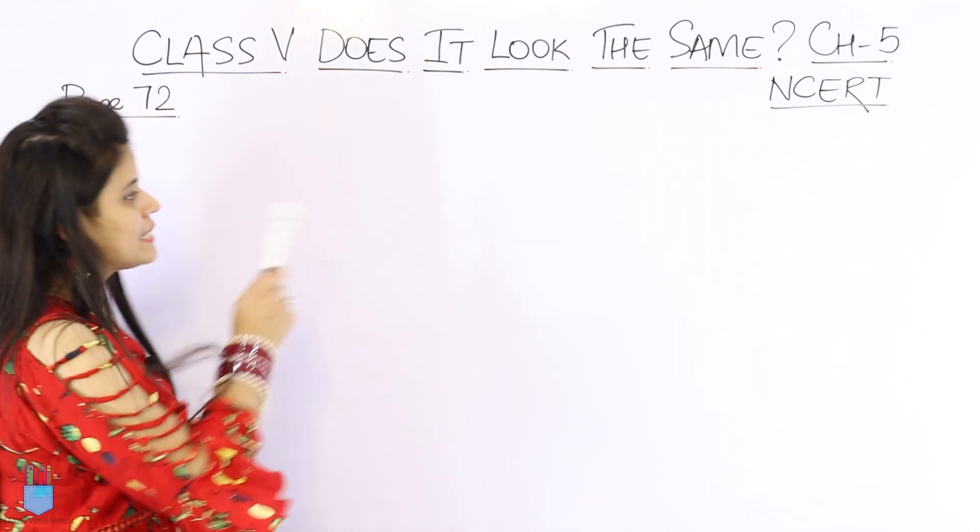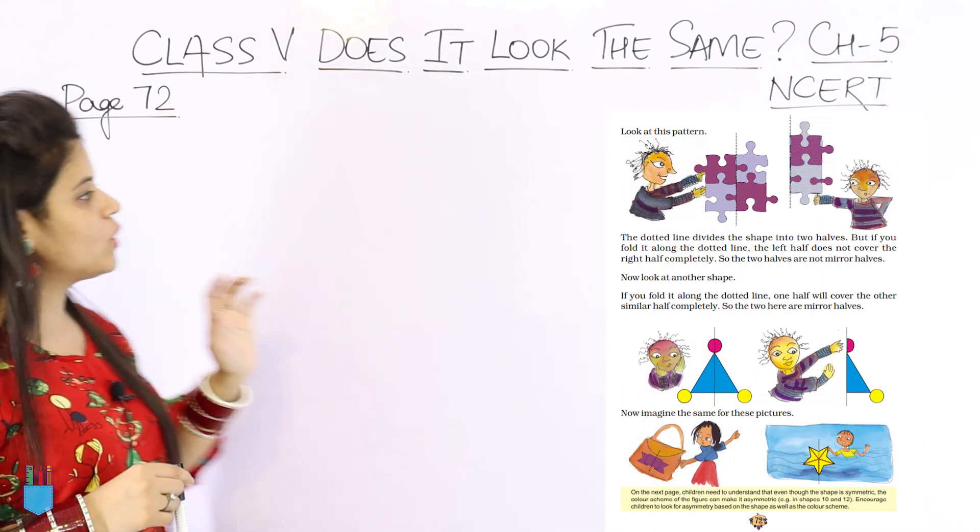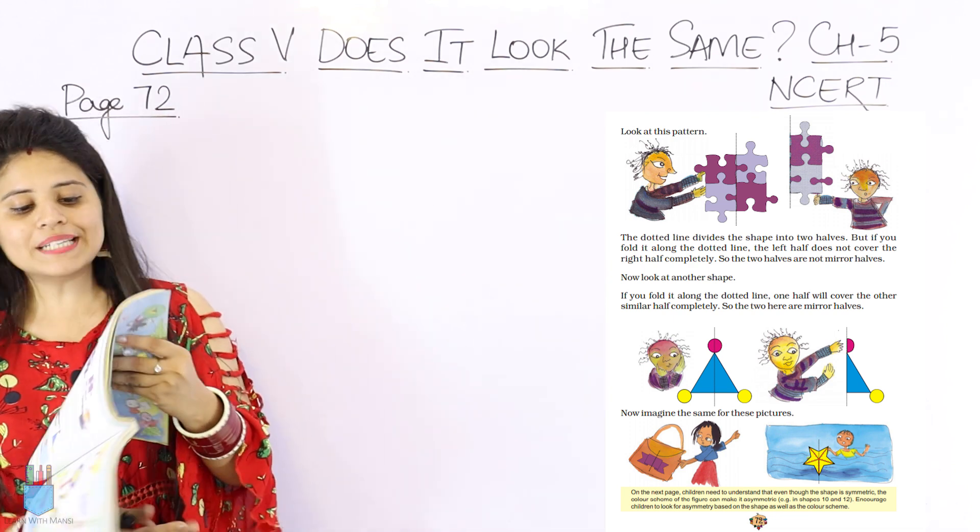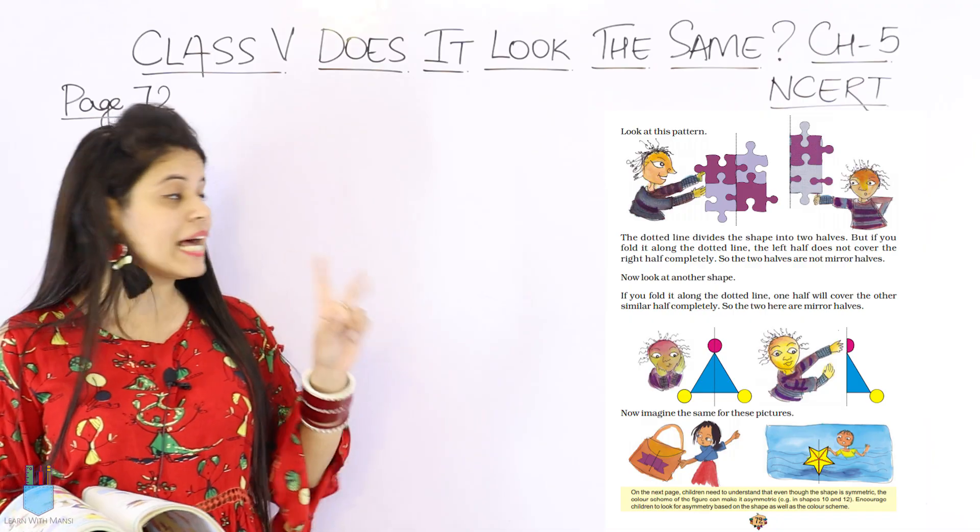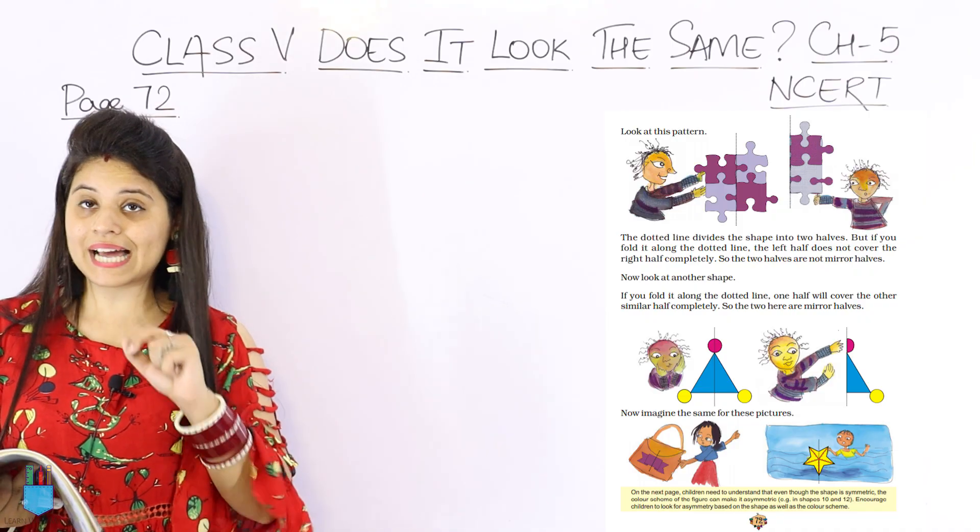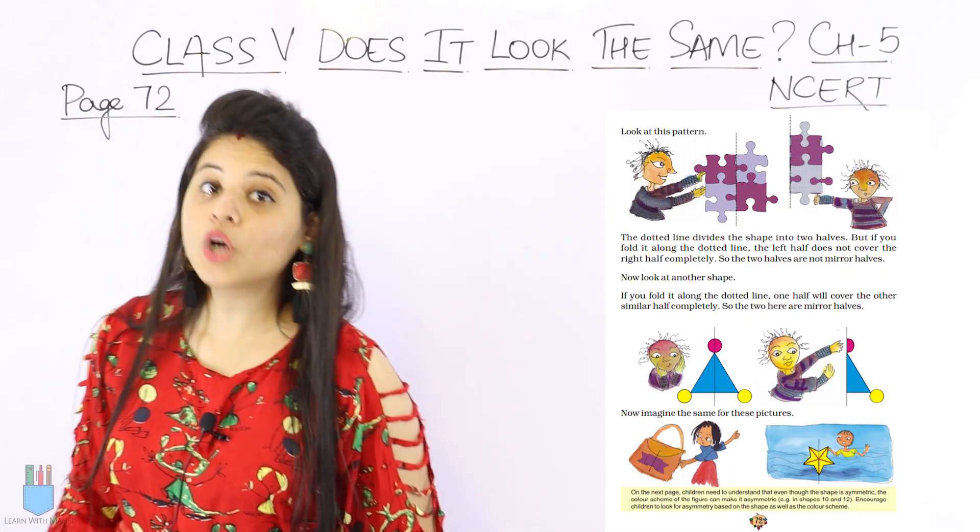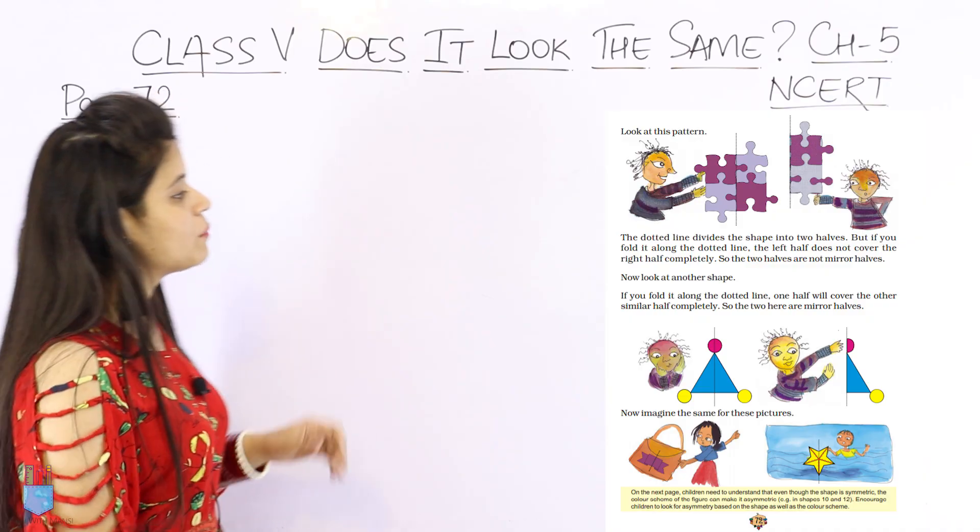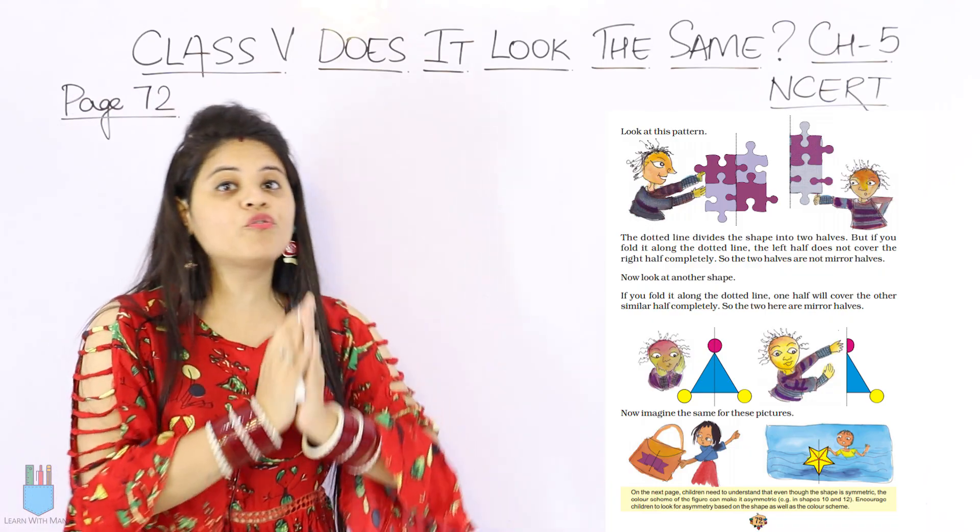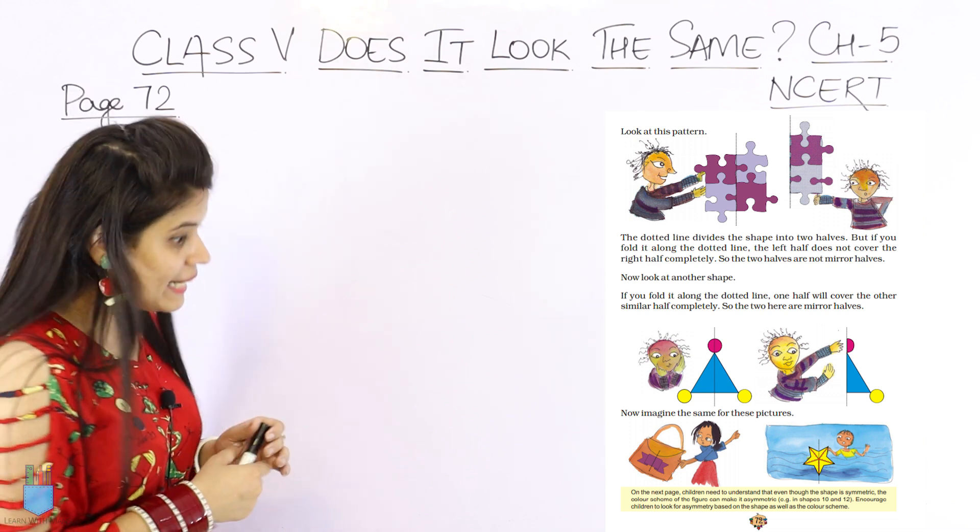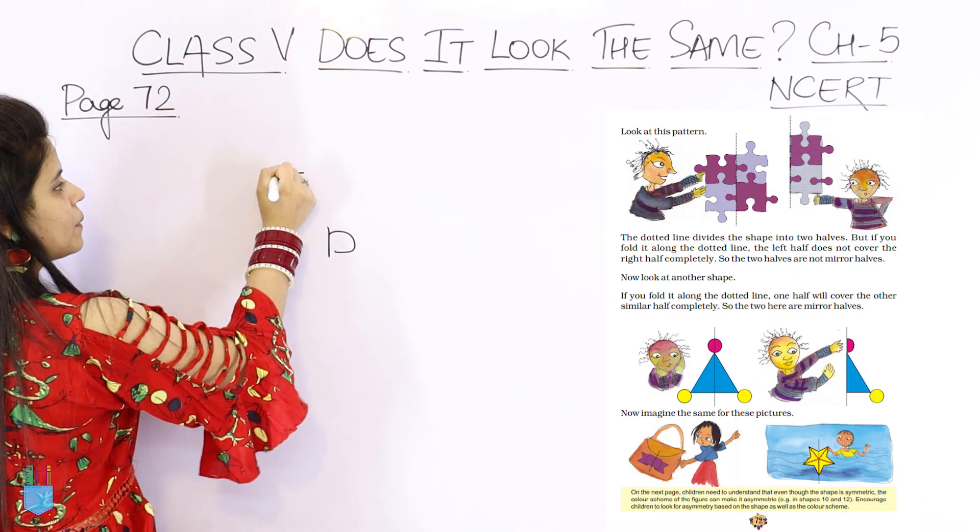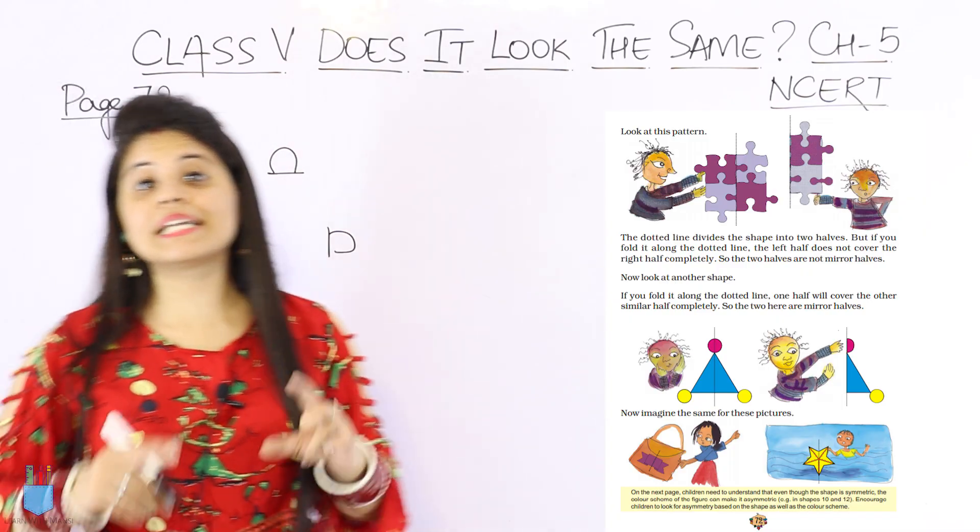Now coming to page 72. You can see we have given a pattern. Look at this pattern. You can see a dotted line - this pattern is divided in two parts. The dotted line divides the shape into two halves. But if you fold it along the dotted line, the two halves are not mirror halves. This is an important thing. If we fold it along the dotted line, it will not completely cover one another. Why? Because the purple one, when it comes to it, this part is extra. The light purple one, this part is extra.